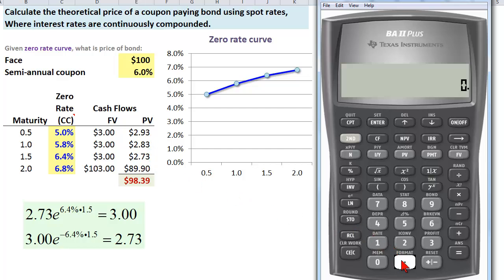And then I have just two more cash flows to do. That next zero rate is 6.4 percent or 0.064, change the sign, multiply by 1.5 years. And then I want e raised to that power and then I multiply that by the three dollar cash flow and I store that in the third variable.